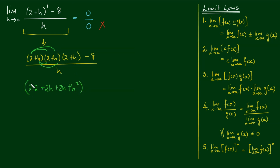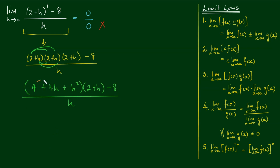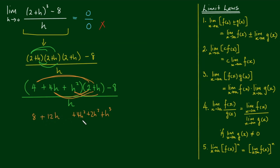Let's simplify before expanding further. 2 times 2 is 4; 2h plus 2h is 4h; and we have h squared remaining. We are multiplying this again by (2 plus h), and copying down minus 8 all over h. Expanding yet again: 4 times 2 is 8; 4 times h is 4h; plus 8h; plus 4h squared; plus 2h squared; plus h cubed. Simplifying: 4h plus 8h is 12h; 4h squared plus 2h squared is 6h squared; plus h cubed, minus 8, all over h.